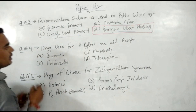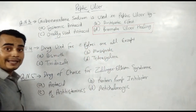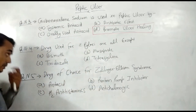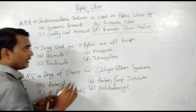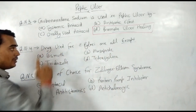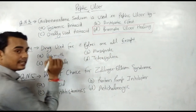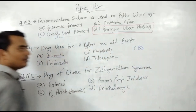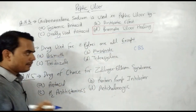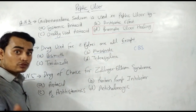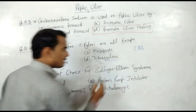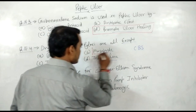Next question: drugs used for H. pylori — all except which one? Options are bismuth, mosapride, tinidazole, and tetracycline. Bismuth is used in the form of CBS (colloidal bismuth substrate). Mosapride is a 5-HT4 agonist, like cisapride — it is not used in H. pylori. Tinidazole and tetracycline are both used in H. pylori. So the correct answer is mosapride — it is not used in H. pylori.